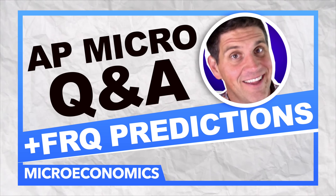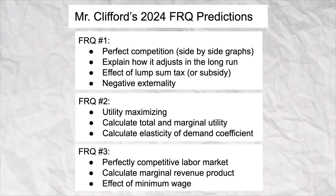Hey econ students, the 2024 AP micro free responses just went public. So let's go over my answers and see how you did. If you watched my predictions video, you know that I thought it was going to be perfect competition with a negative externality, utility maximizing with elasticity, and perfectly competitive resource market. So I had three out of five, so not particularly good.